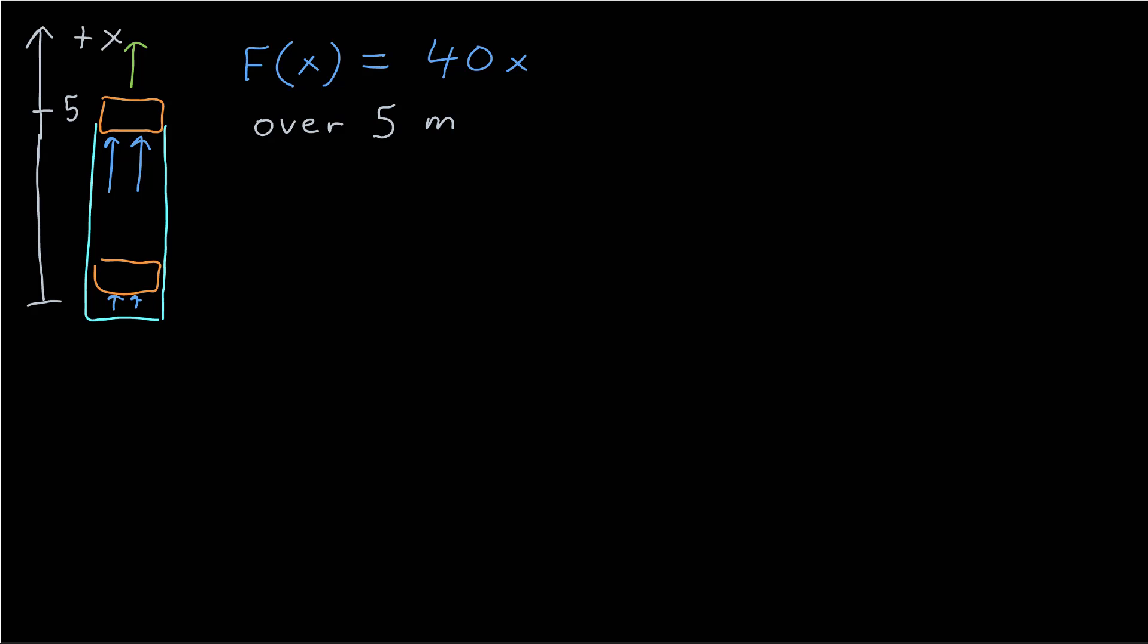Well the first thing I'm going to do is set up a coordinate system. I'm going to set my origin at where the object starts, and then the force ends at x equals five meters, and I'll have positive in that same direction.